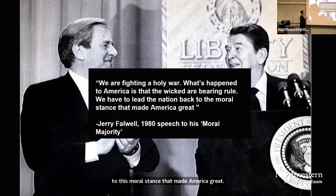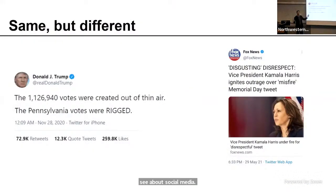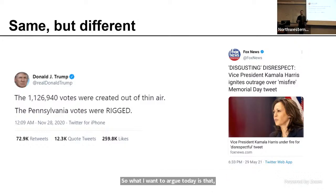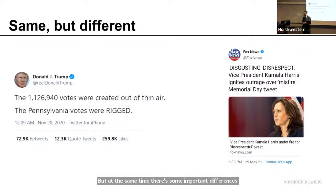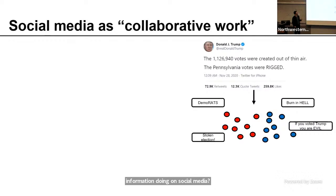In traditional media we've actually seen something similar to the claims made about social media — outrage stoking and moralization coming from political elites who have asymmetric control over information on the broadcast. What I want to argue is that social media is actually just a modern context of something we've already seen in traditional media. But at the same time, there are important differences related to the features of the platforms, including the big social networks and especially the algorithms that are playing a role.